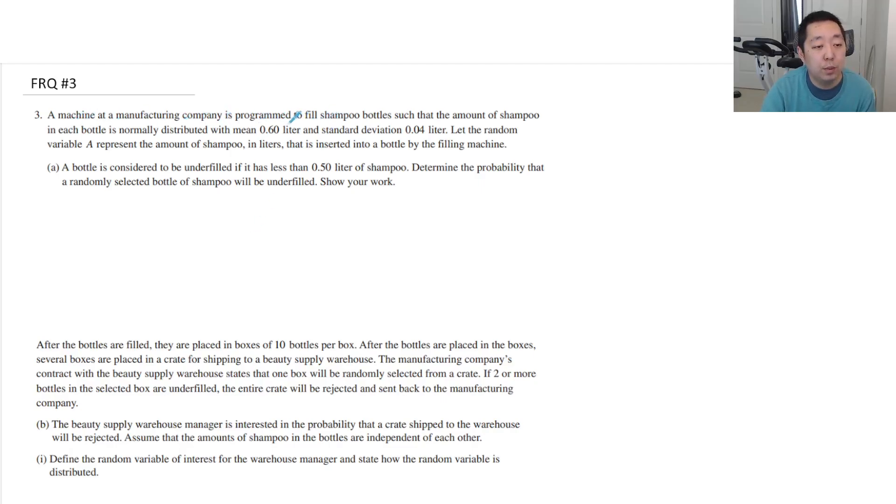A machine at a manufacturing company is programmed to fill shampoo bottles such that the amount of shampoo in each bottle is normally distributed with mean 0.6 liters and standard deviation 0.04 liters. Let the random variable A represent the amount of shampoo in liters inserted in the bottle by the filling machine. A bottle is considered to be underfilled if it has less than 0.5 liters. Determine the probability that a randomly selected bottle of shampoo will be underfilled. So I want the probability that A is less than 0.5.